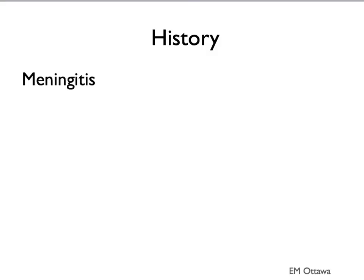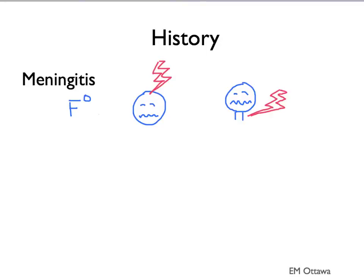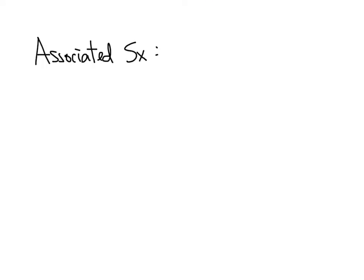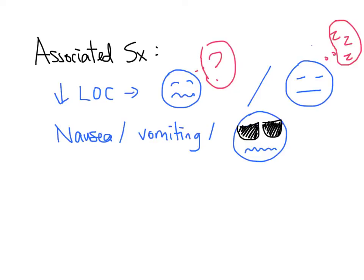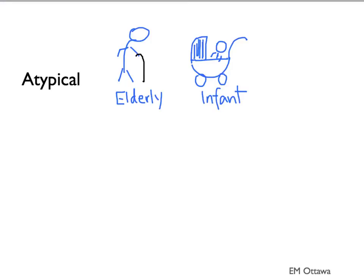In terms of history, patients with meningitis may complain of fever, headache, and neck stiffness or pain. However, less than 50% of patients have this classic triad, particularly early in the disease. Associated symptoms include decreased level of consciousness, either confusion or lethargy, as well as nausea, vomiting, and photophobia. Atypical symptoms can occur particularly in the elderly or infants, who might only have lethargy or decreased level of consciousness without headache or neck pain.